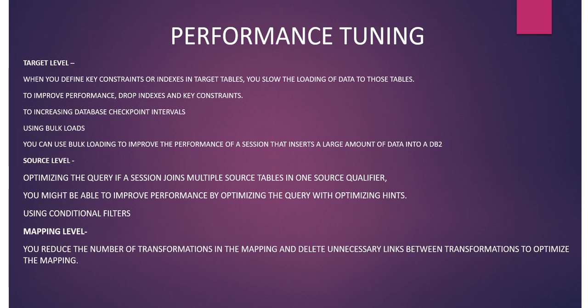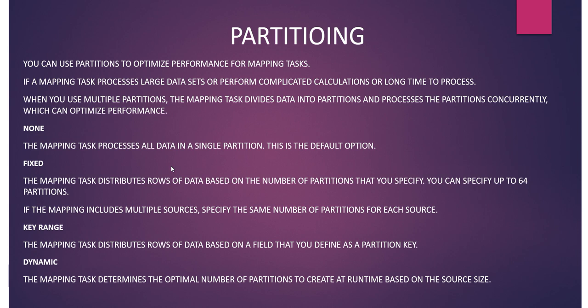Using partitioning, we can improve performance. There are four types of partitioning for mapping tasks: none, fixed, key range, and dynamic. None is the default option. In fixed partitioning, data rows are distributed based on the number of partitions you specify — you can specify up to 64 partitions. If the mapping includes multiple sources, specify the same number of partitions for each source.